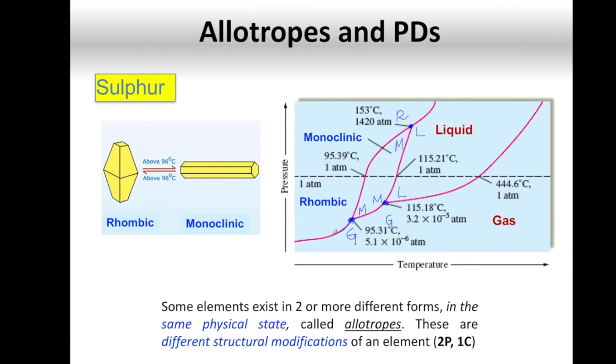It still holds true that along these lines, you're going to have an equilibrium between two different phases. The phases being, for example, in this case, the rhombic going to monoclinic. Even though both of them are solids, still they are different phases. Monoclinic to liquid, monoclinic to gas, rhombic to gas, etc.